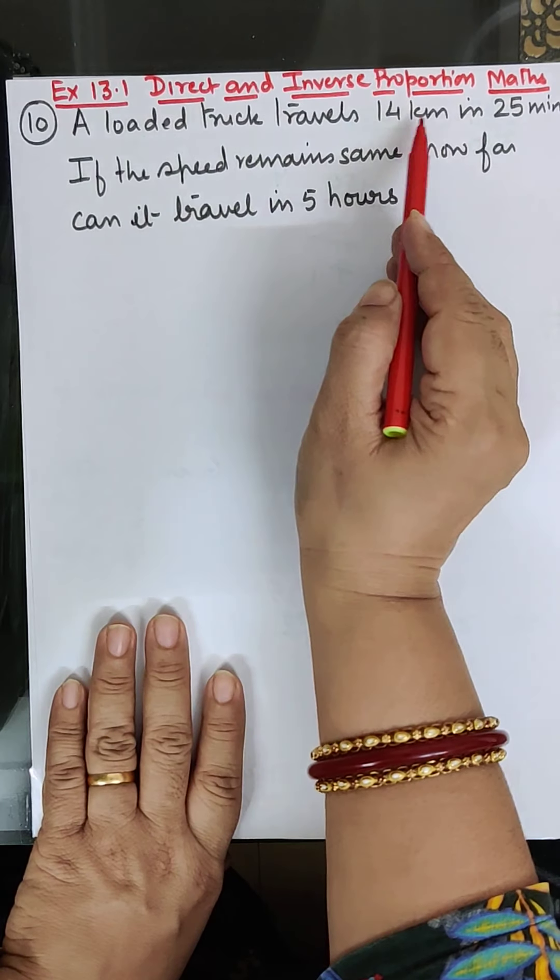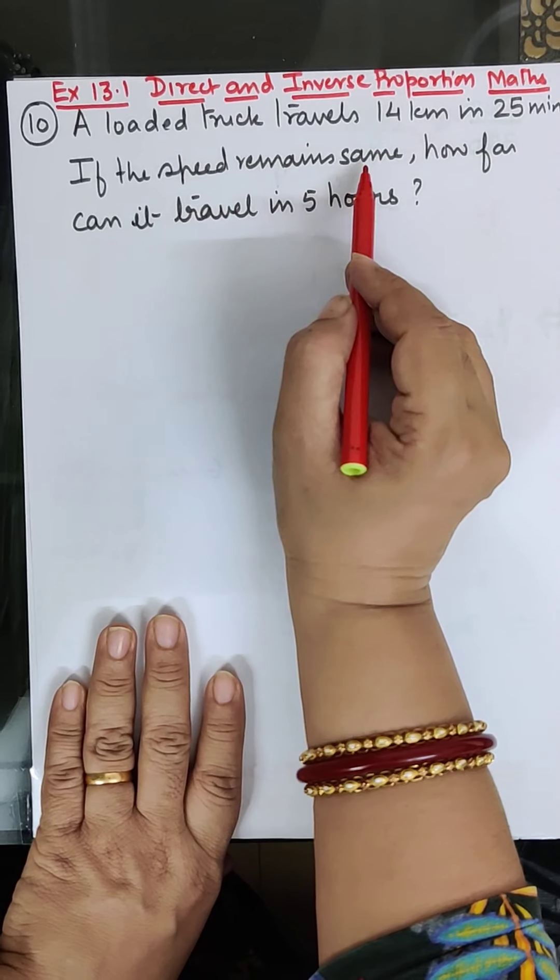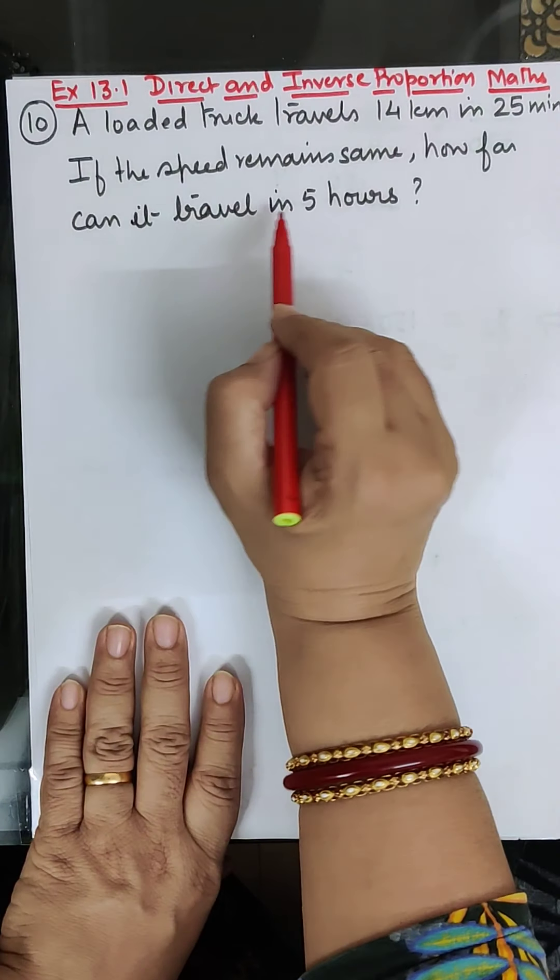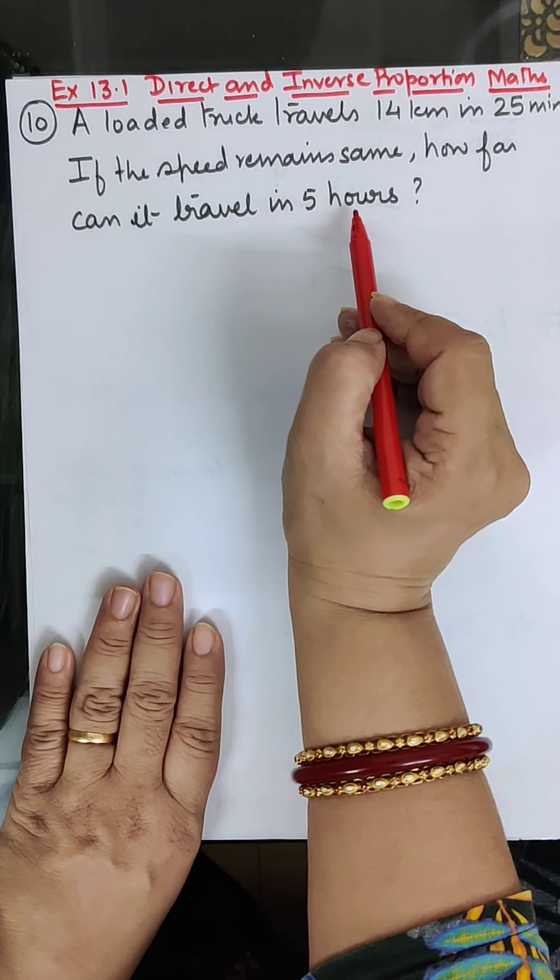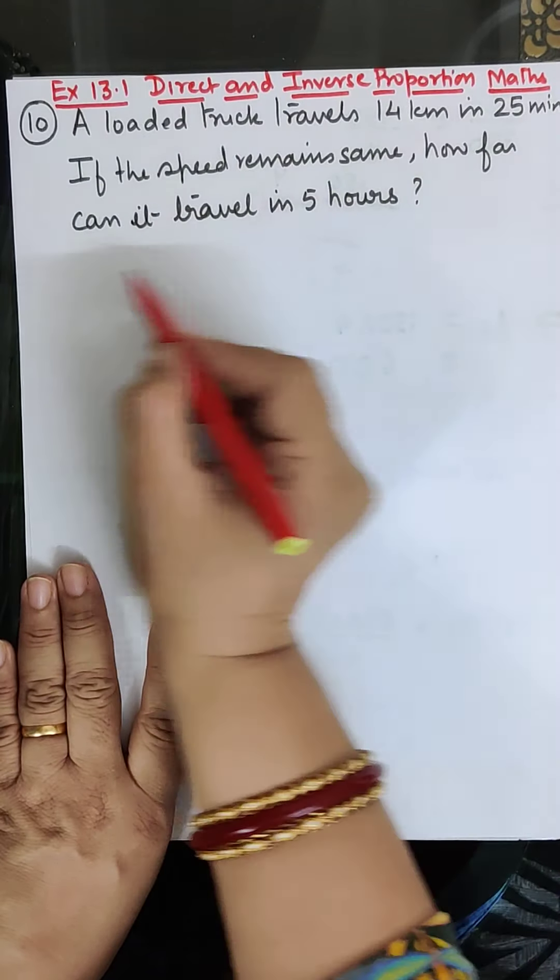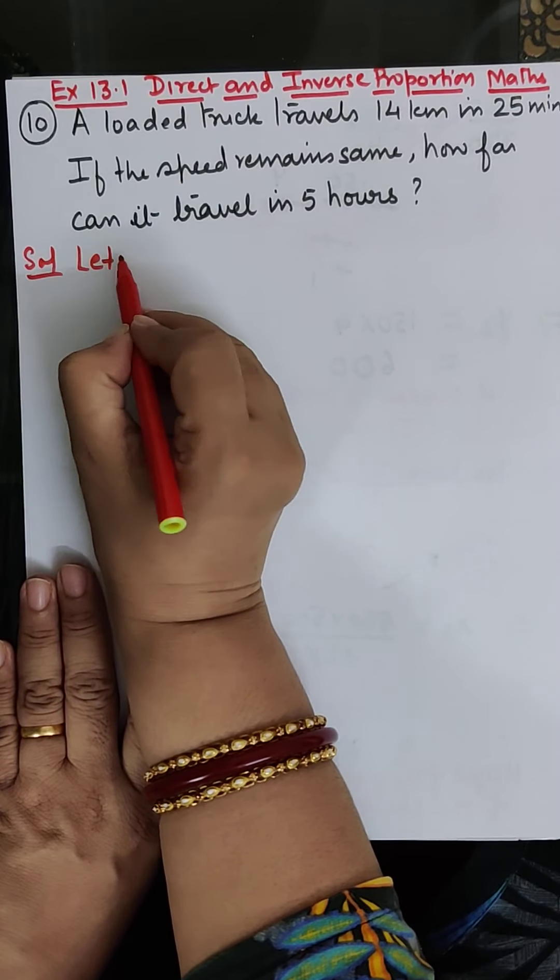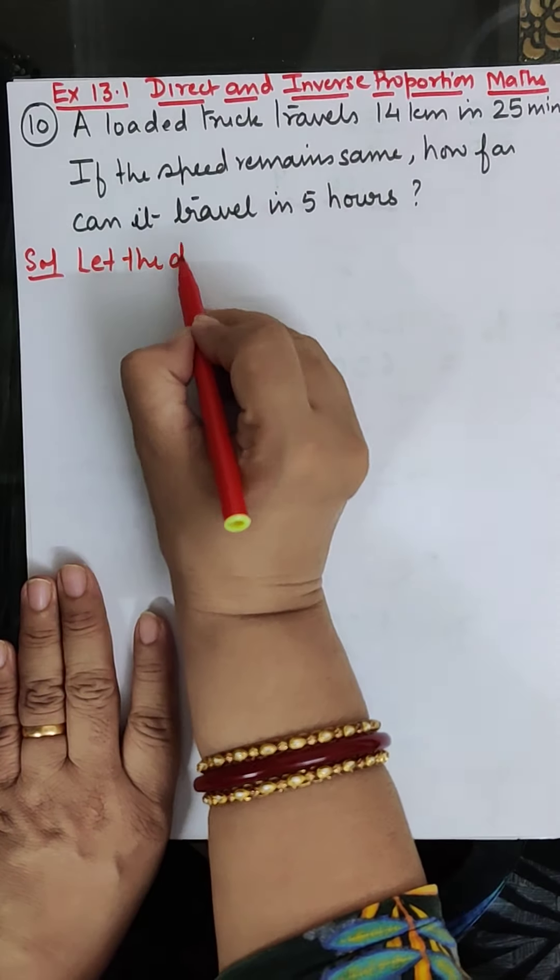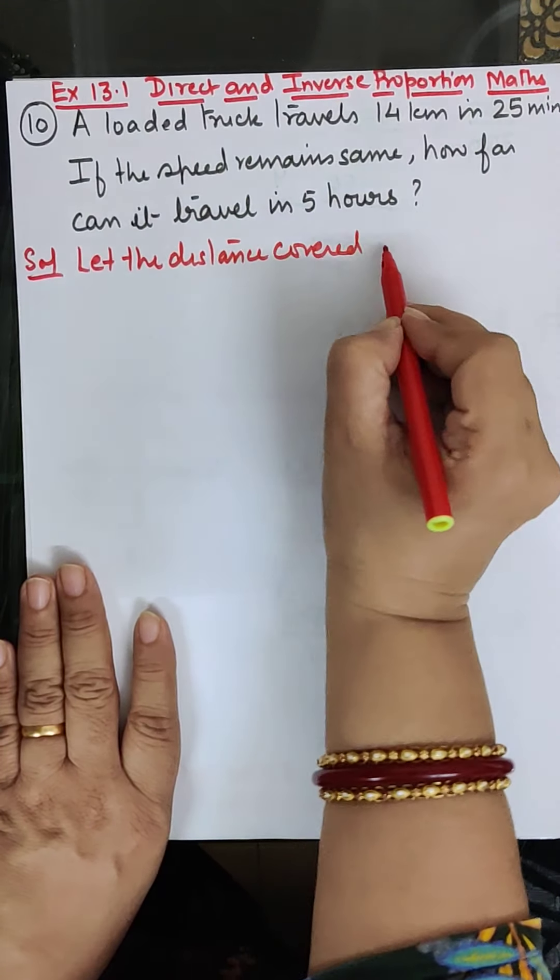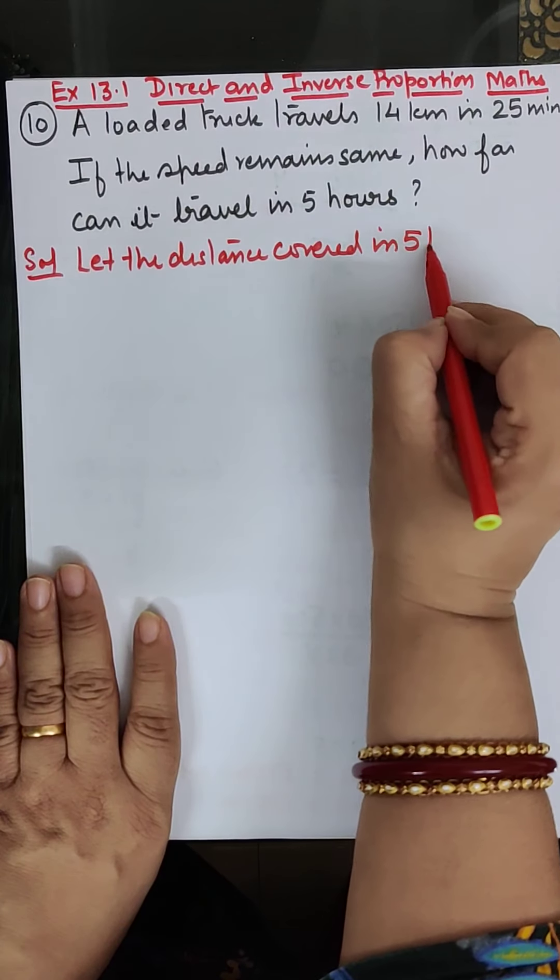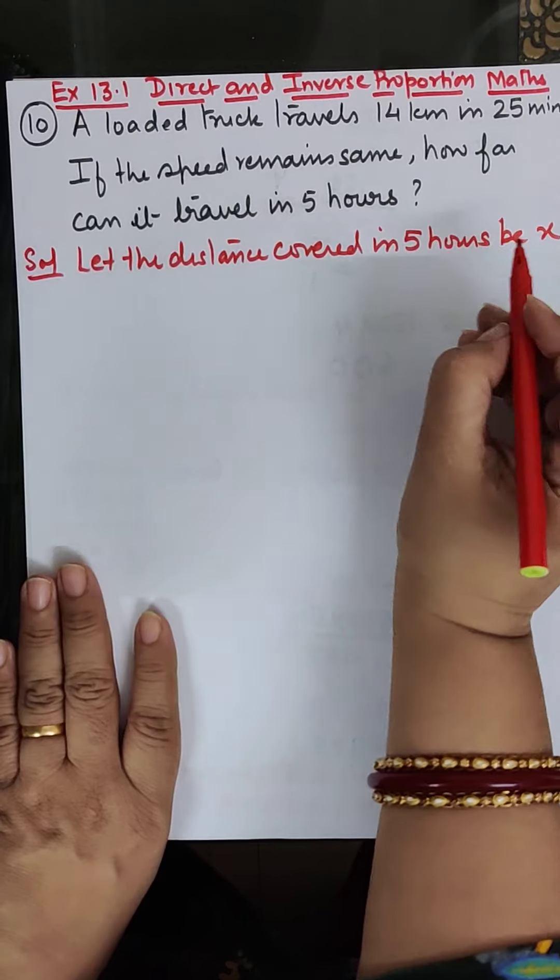A loaded truck travels 14 kilometers in 25 minutes. If the speed remains the same, how far can it travel in 5 hours? So, let us assume, let the distance covered in 5 hours be X.